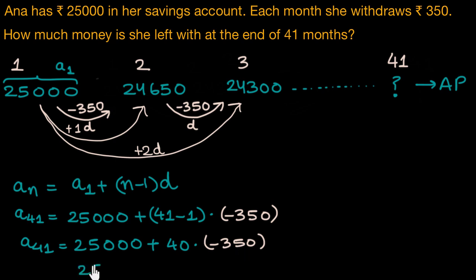And how much is this? This comes out to be 11,000. So, Anna has 11,000 rupees remaining in her bank account by the end of 41 months.